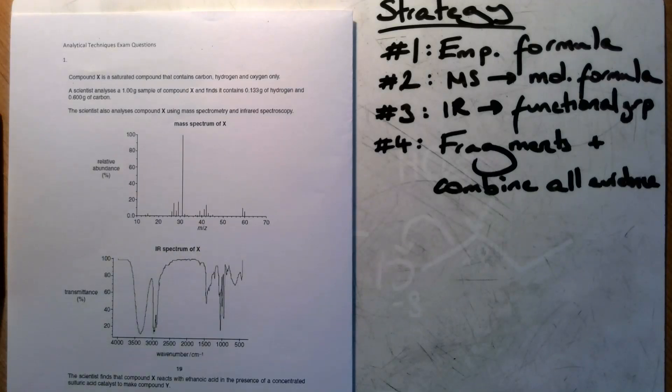Ok, so here we're going to look at an exam question which combines the techniques of mass spectrometry and infrared spectroscopy. I'm going to come at this with a particular strategy. The first thing we want to do is work out the empirical formula using the technique that we've learnt before with the data that they've given us, so we'll look at that first.